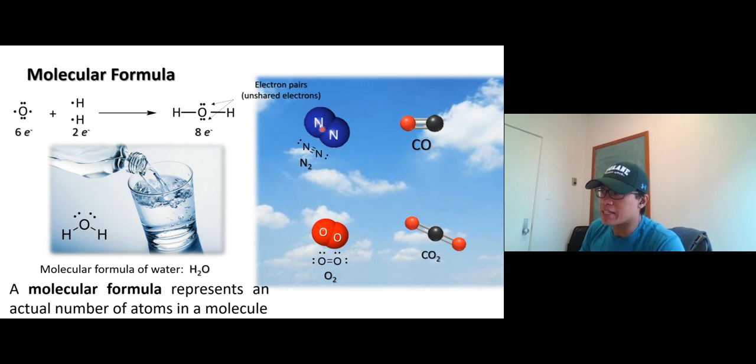One molecule of nitrogen gas is two, there are two nitrogen, so we write N2. An oxygen gas is two oxygen atoms, so we write O2. In carbon dioxide, one carbon two oxygen, we write CO2. So for covalent compounds we use the molecular formula to represent an actual number of atoms in the molecules.